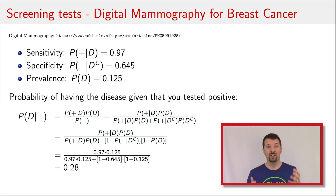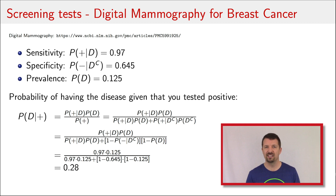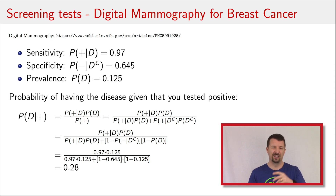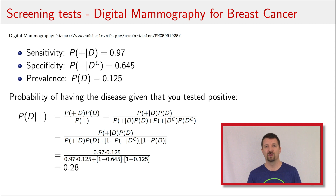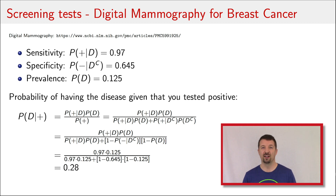So still not very high. You've gone to the doctor, had the screening test, and it's positive, but it's actually still more likely that you don't have the disease than that you do. The point here is to take the results of a screening test with a grain of salt, with an understanding that sensitivity, specificity, and prevalence all play a role in the probability of having the disease given you tested positive. You might want to talk with your doctor about the sensitivity, specificity, and prevalence of the disease being tested.